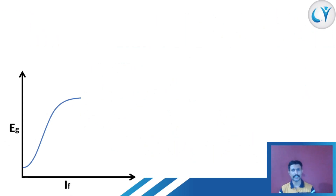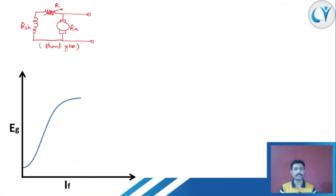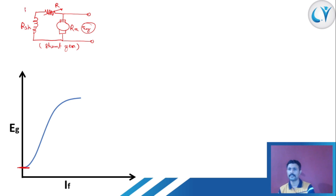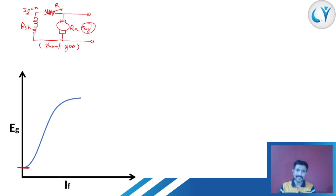Let us draw the circuit diagram for a shunt generator. When the field current is zero, we are still getting some induced EMF. When there is no field current, at zero field current we are getting some amount of induced EMF, and this is because of the residual magnetism in the poles. When previously this generator was operated, some amount of residual magnetism stayed in the poles of that generator, and because of that residual magnetism this EMF is induced.